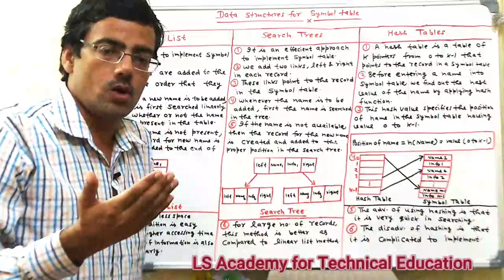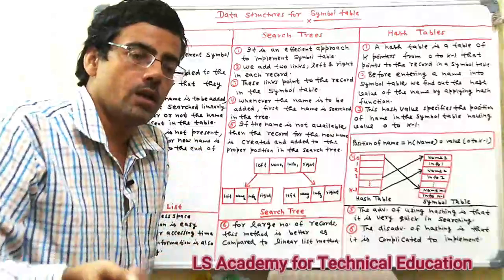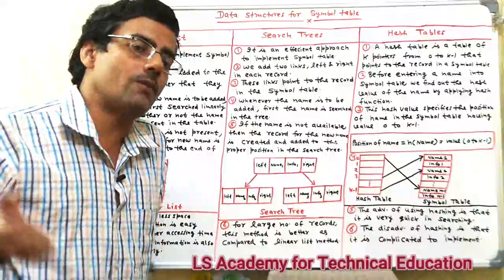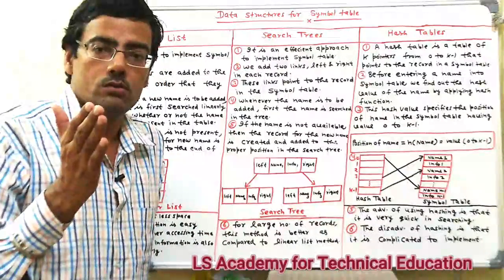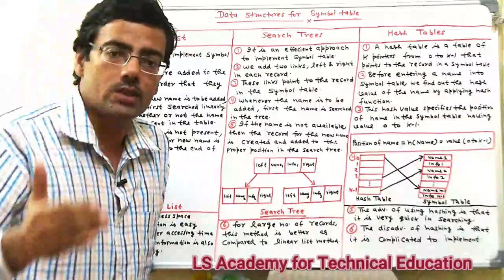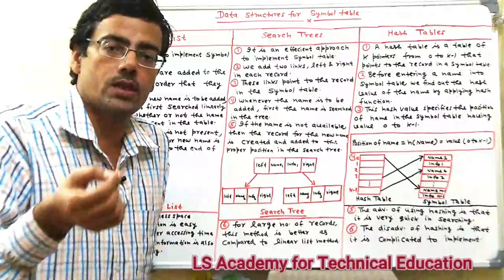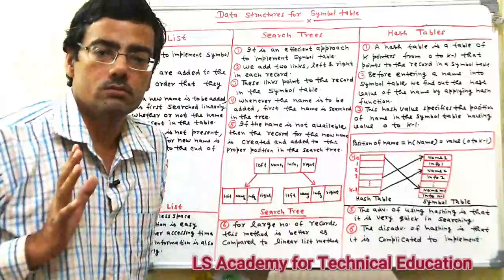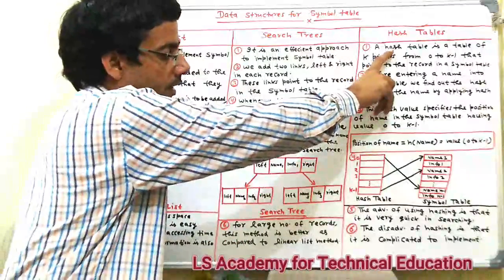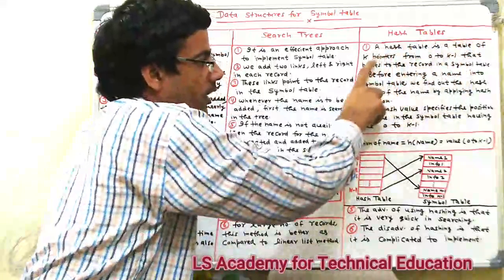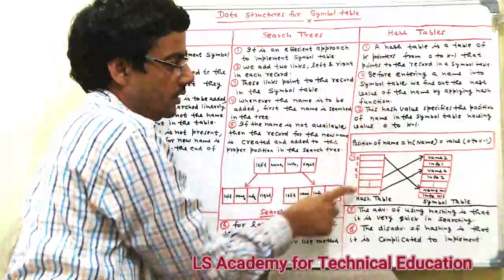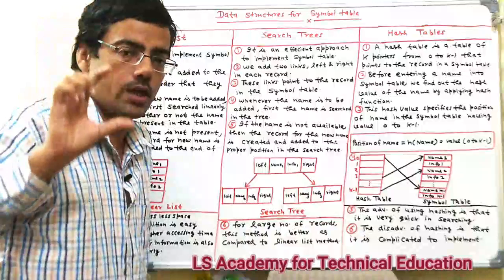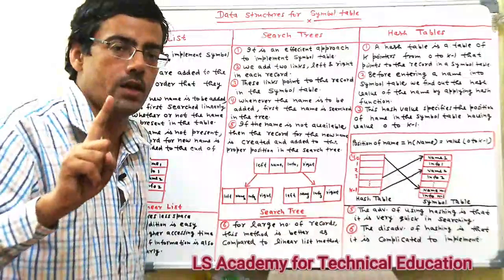So when a record is added, it is saved at the position determined by the hash function. A hash table is a table of k pointers, indexed from 0 to k-1, with a total of k elements in the table.